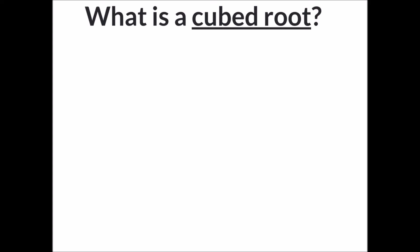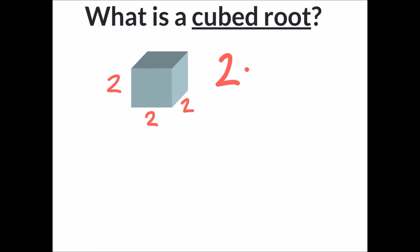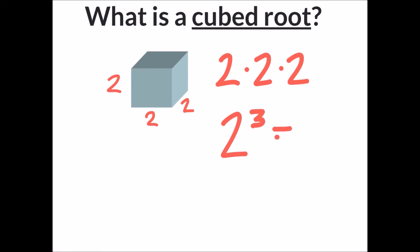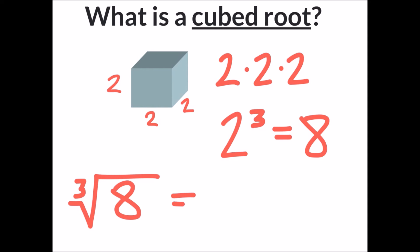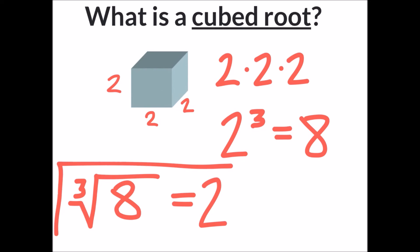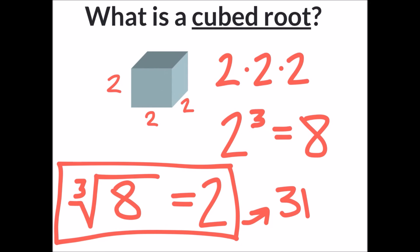A little more difficult than square roots is the cubed root. We can look at a cube in three dimensions — for example, if all sides are two units, then two times two times two, which simplifies to two to the power of three, equals eight. So a cubed root would be written as: the cubed root of eight equals two. Cubed roots are three-dimensional.